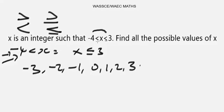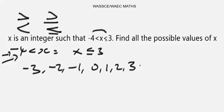Now, if the question were written differently — say, -4 ≤ x ≤ 3 — then x would be greater than or equal to -4, and you would start with -4 to represent the possible values of x. But since we do not have that sign here, we start at -3.